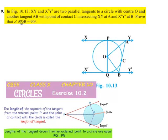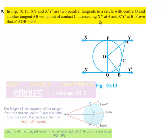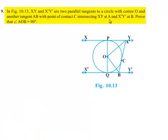Moving on to the 9th question: in figure 10.13, XY and X'Y' are two parallel tangents to the circle with center O, and another tangent AB with point of contact C intersecting XY at A and X'Y' at B. Prove that angle AOB equals 90 degrees.